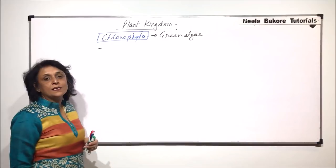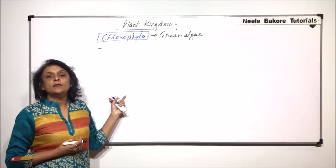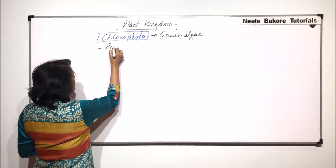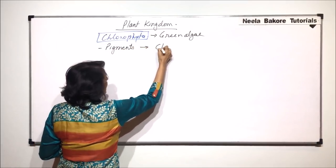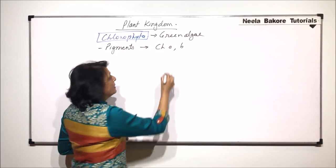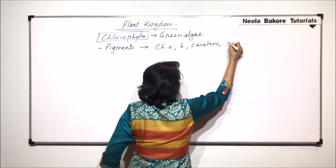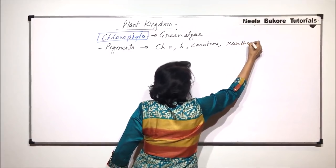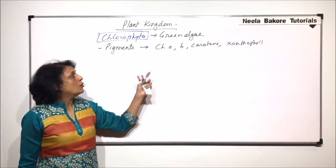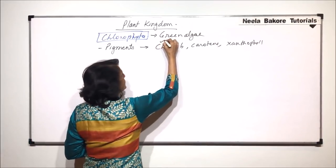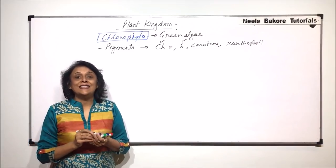Chlorophyta, as the name tells us, they are green. So they have the predominant pigment that is chlorophyll. The pigments present are mainly chlorophyll A and B, plus carotene and xanthophyll. Apart from the green pigments there are other pigments also, but chlorophyll A and B are the predominant ones, and that is why the algae appears green in colour.